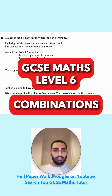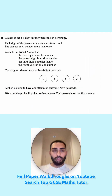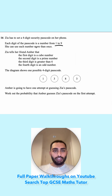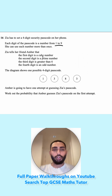Question 16. Zia has to set a four-digit security passcode on her phone. Each digit of the passcode is a number 1 to 9, and she can use each number more than once. Zia tells her friend Amber that the first digit is a cube number.